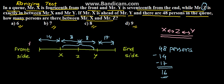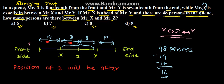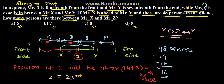So now we can find the position of Z. X is at 14th from the front and Z is 8 positions after X. So the position of Z will be 14 plus 8 equals 22nd place. That means Z will be at the 23rd place from the front.